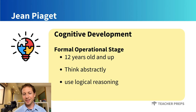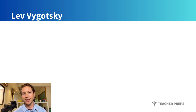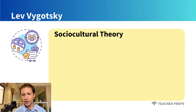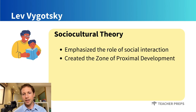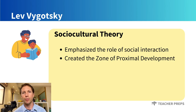Our next important educational theorist is Lev Vygotsky, who created the sociocultural theory. Key concepts from Vygotsky include his emphasis on the role of social interaction and culture in cognitive development. He also created the zone of proximal development, which is the difference between what a child can do independently and what they can do with guidance from a skilled partner, like a parent, sibling, or teacher.